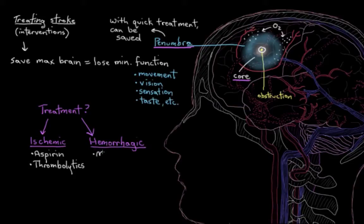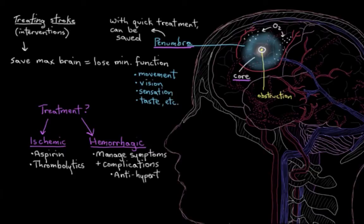With hemorrhagic strokes, it's more about managing symptoms and potential complications in the initial phases. Sometimes an antihypertensive is used to lower blood pressure and thus the amount of bleeding in the brain, sometimes an anticonvulsant to prevent seizures, and sometimes drugs to reduce brain swelling. There are a few different medication options for these two types of strokes.